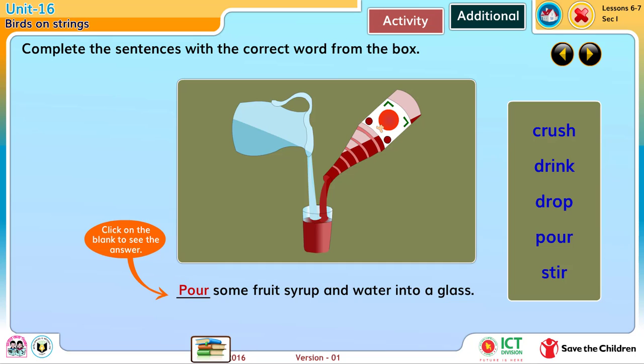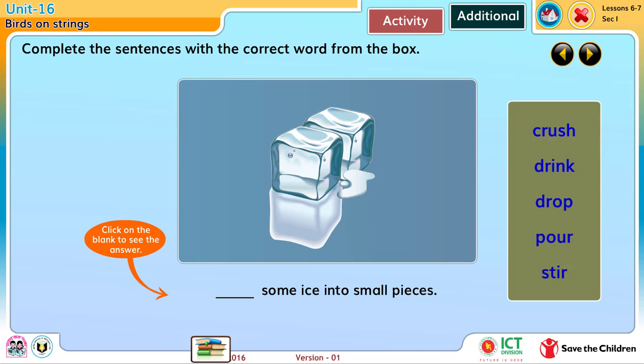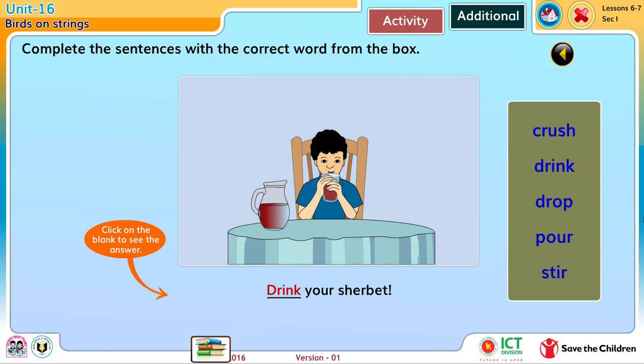Pour some fruit syrup and water into a glass. Stir the fruit syrup and water together. Crush some ice into small pieces. Drop the pieces of ice into the glass. Drink your sherbet.